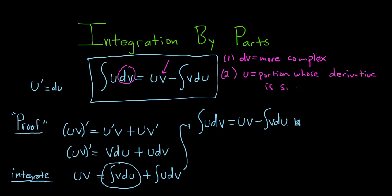Derivative is simpler. So, for example, if you have x squared, a good candidate for u would be x squared, because the derivative of x squared is 2x, so it's simpler. This is really important. dv always has the dx part. So it always has dx.